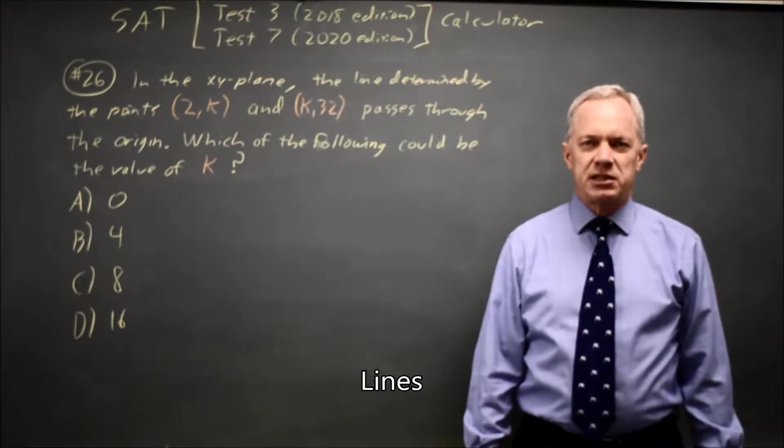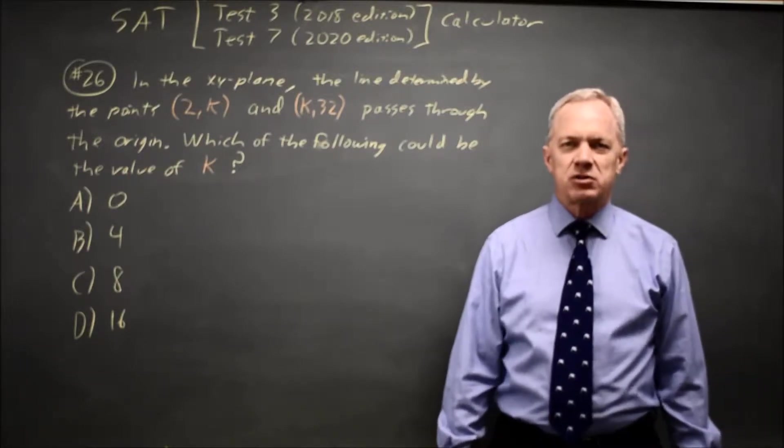This is calculator question number 26. College Board tells us that two points in the plane are on a line that passes through the origin.